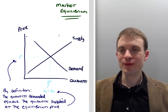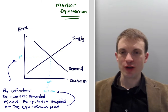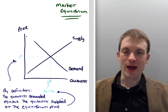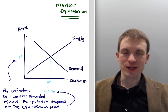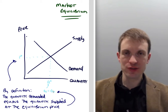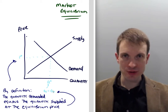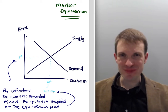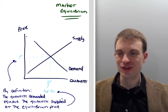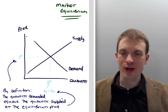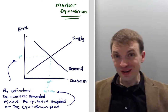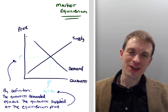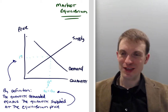Bringing it together, we have our market equilibrium, which corresponds to the crossing point between supply and demand, consisting of an equilibrium price and an equilibrium quantity. By definition, at the market equilibrium the quantity supplied equals the quantity demanded — that's the price where the amount sellers bring to market exactly equals the amount buyers want at that price. It is wrong to say demand equals supply at equilibrium; the correct statement is that quantity demanded equals quantity supplied.